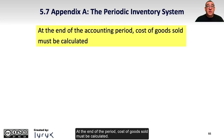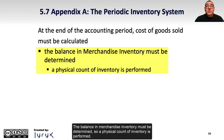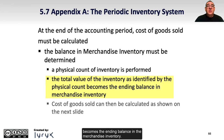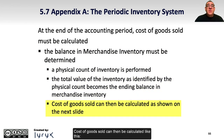At the end of the period, cost of goods sold must be calculated. The balance in merchandise inventory must be determined, so a physical count of inventory is performed. The total value of the inventory as identified by the physical count becomes the ending balance in the merchandise inventory. Cost of goods sold can then be calculated.